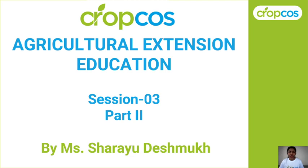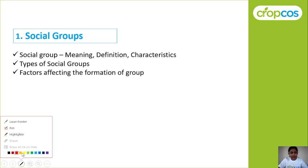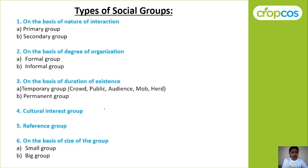Welcome to Crop Course students and Agricultural Extension Education Session 3. We have already covered Part 1 of this session and today we are going to see Part 2. After covering Part 2, we will discuss important objective type questions. We have already covered social groups — meaning, definition, characteristics, and types of social groups. We also covered reference group and the basis of nature of interaction. If you missed that, please check the previous video, Session 3 Part 1.